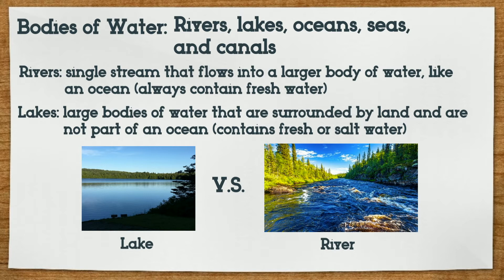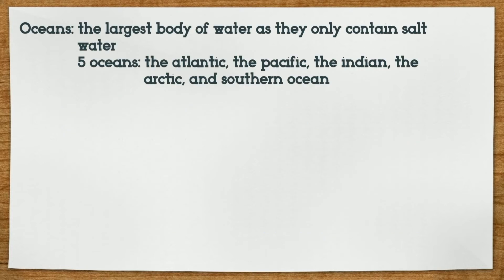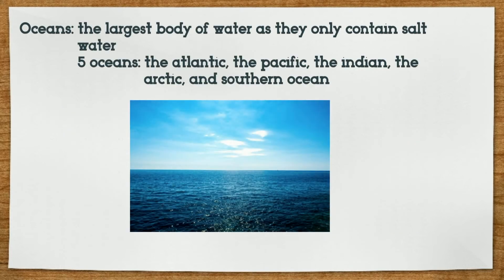So the next time you go to a national park, try to identify if the body of water is a river or a lake. Oceans are the largest body of water, as they contain only salt water. There are five oceans in the world: the Atlantic, the Pacific, the Indian, the Arctic, and the Southern Ocean.